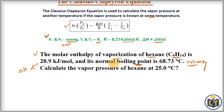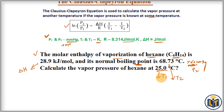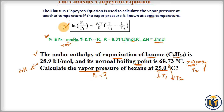The question asks to calculate the vapor pressure of hexane at 25.0°C. We label 25.0°C as T1 (the initial temperature) and 68.73°C as T2 (the final temperature). At T2, the vapor pressure P2 is 760 mmHg. At T1, the vapor pressure P1 is what we need to calculate. So ΔH, T1, T2, and P2 are all known; we solve for P1.